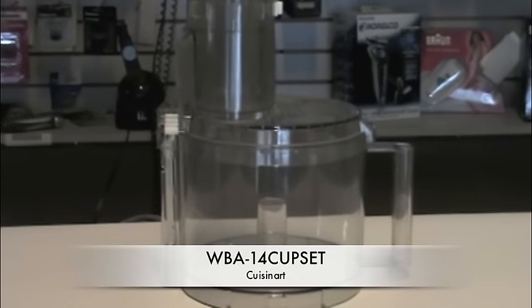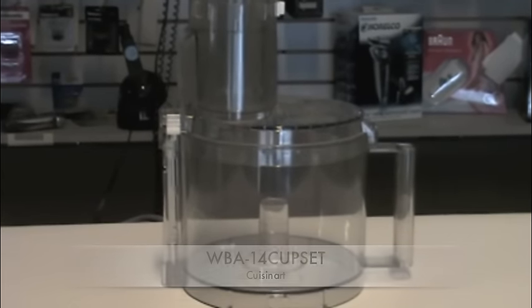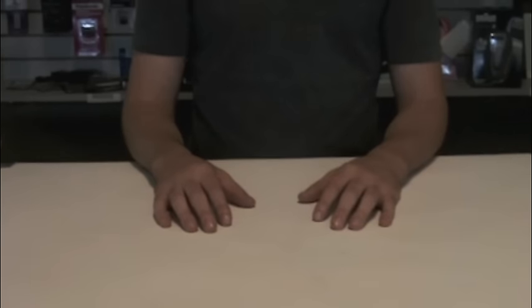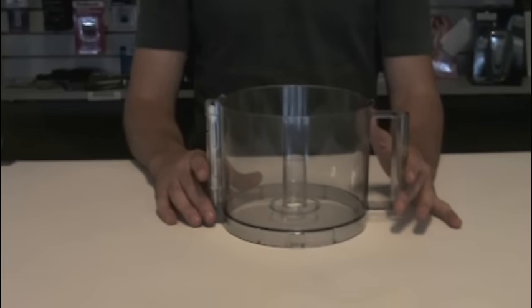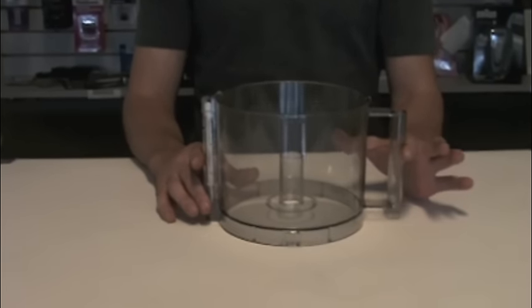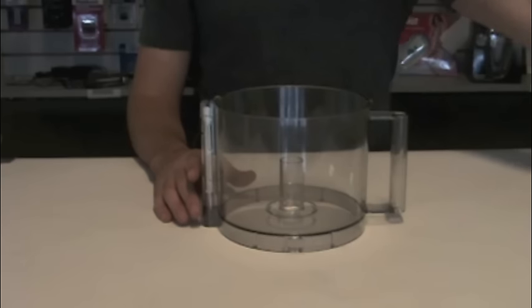What we're going to discuss in this video is putting together the WBA-14 Cup Set Food Processor Work Bowl Assembly. You're going to start with the 14 Cup Clear Work Bowl which is the DLC-005A GTX for your Cuisinart food processor.